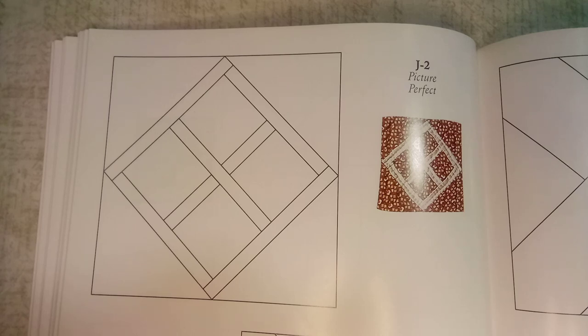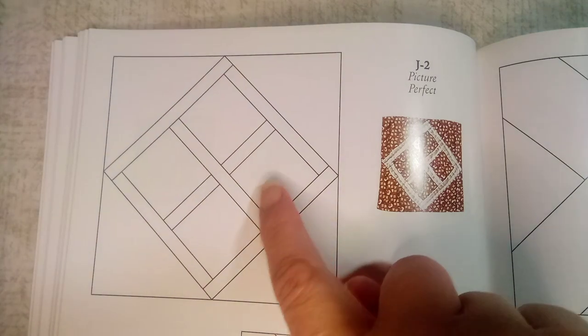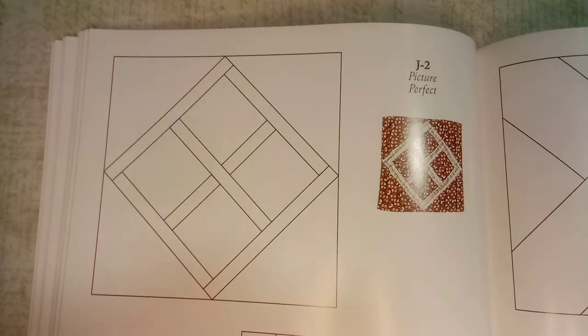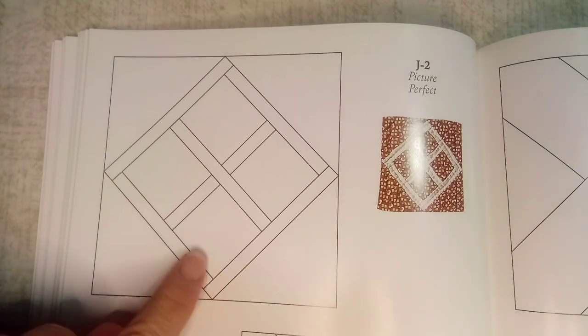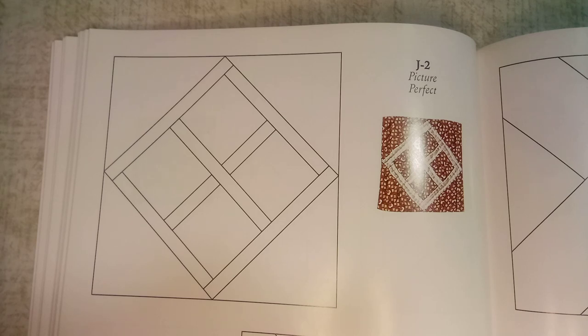For each of the center squares out of the focus fabric, those will need to be cut at one and three-quarters of an inch because the squares finish off at one and a quarter inch.